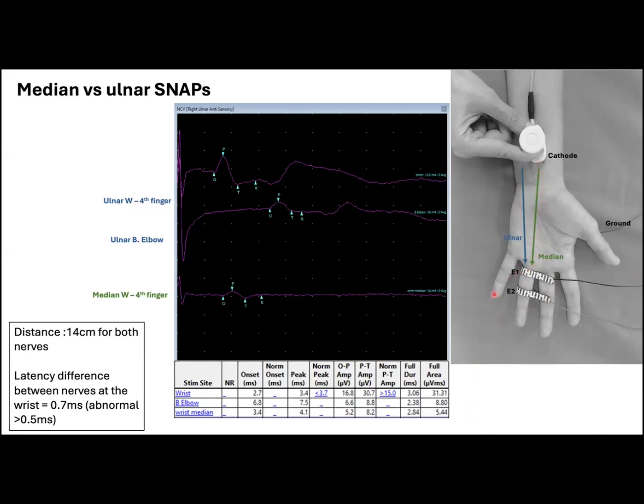In this antidromic comparison, the median snap recorded at the ring finger is not only smaller, but also has prolonged latencies when compared to the ulnar nerve, as you can see here in the picture.